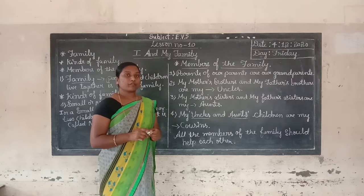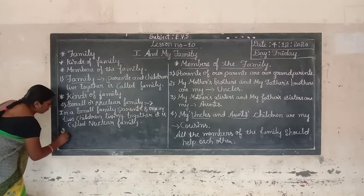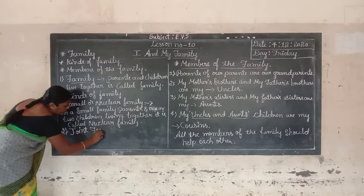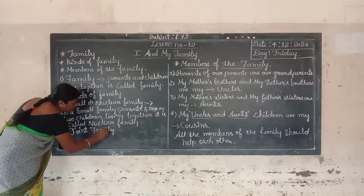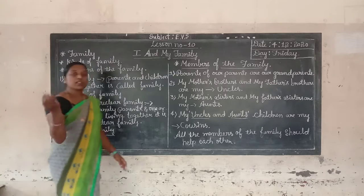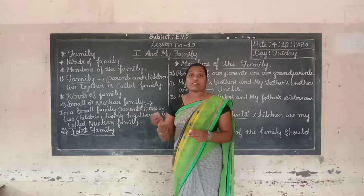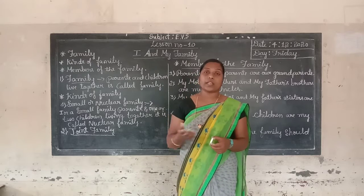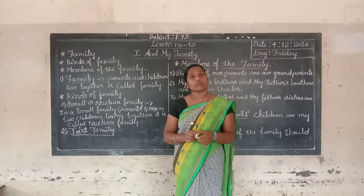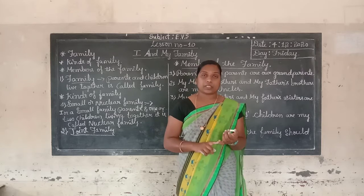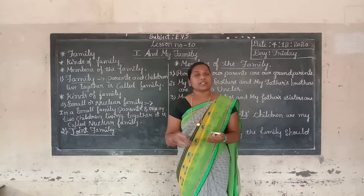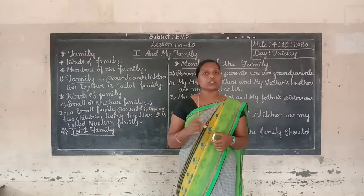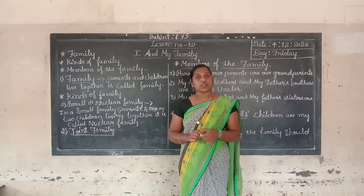Now let us go to the second kind, that is joint family. So what is a joint family? In big families, parents and many members live together — it is called a joint family. For example, father, mother, grandparents, and their children, uncle, and auntie — many members living together is called a joint family.